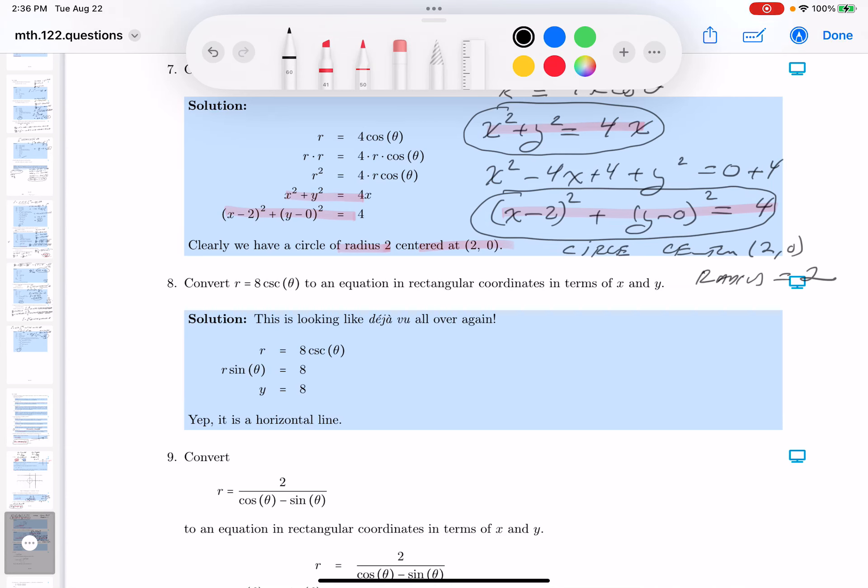Okay, number 8, looking at it, I don't like the cosecant. I'm not saying it's a bad thing, but I like sines and cosines, so I'm going to write this over here.